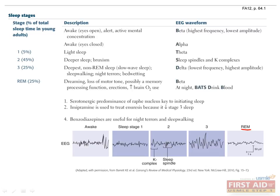In REM sleep, comprising about 25% of total sleep in young adults, the EEG waveform observed is the beta waveform, which is the same waveform as during the awake and alert state and has a sawtooth appearance. This is why REM sleep is also known as paradoxical sleep. REM sleep is characterized by dreaming, loss of motor tone, erections, and increases in brain oxygen usage, possibly related to a memory processing function.